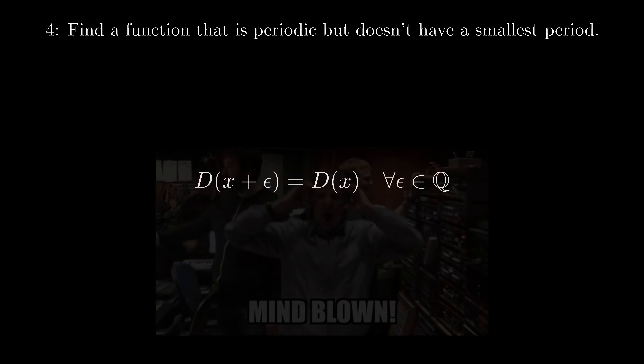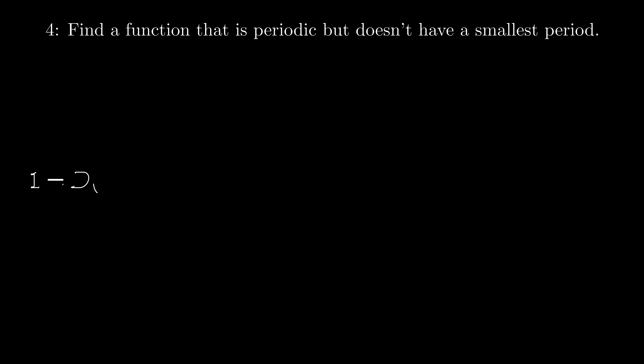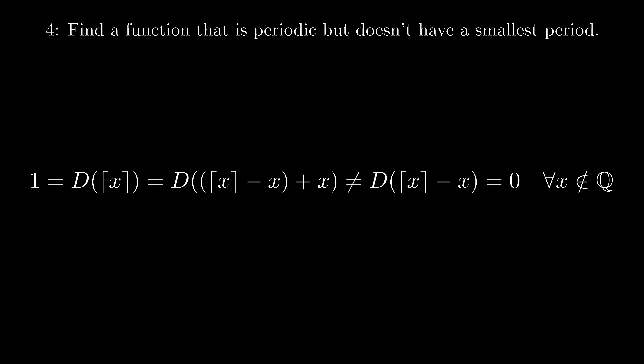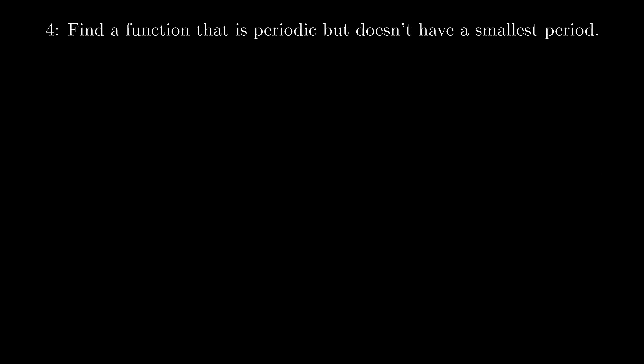How about irrational numbers as potential periods? Let's say x is an irrational number. Then the ceiling of x — the smallest integer greater than or equal to x — is an integer, therefore rational, so d(ceiling(x)) is one. However, ceiling(x) minus x is another irrational number, so d(ceiling(x) − x) is zero. We can conclude that any irrational number is not a period of the Dirichlet function.